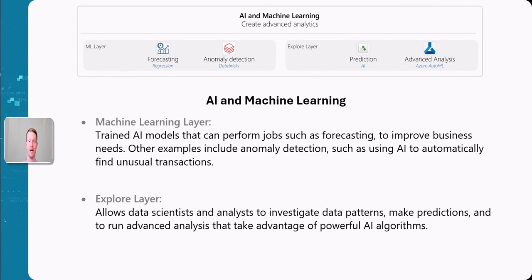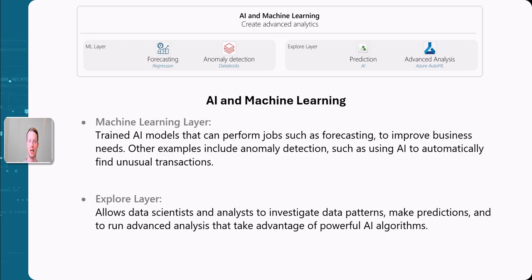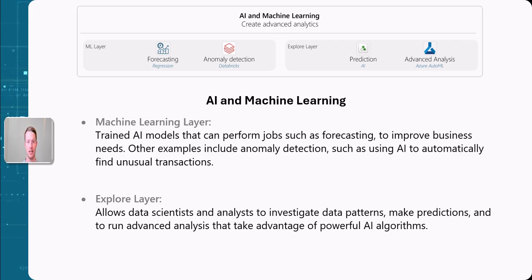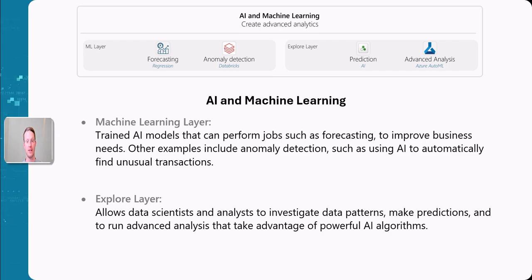The next component is AI and machine learning, which normally sits on top and uses the data in other systems. We have the machine learning layer where we can train AI models to perform jobs like forecasting — predicting things in the future better than we can without these advanced algorithms. We can also look at anomaly detection: for example, in banking, detecting fraud from customers is very hard to do manually, so we use advanced AI machine learning algorithms. We can also allow data scientists to explore data, run experiments, find new patterns, run predictions, or use advanced analysis to prepare reporting.